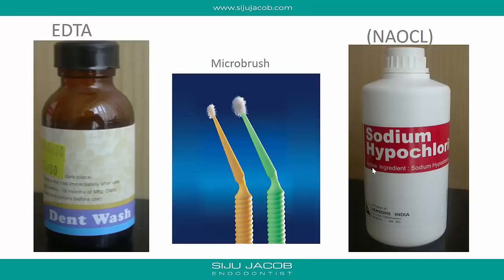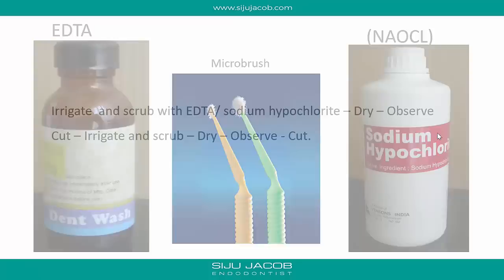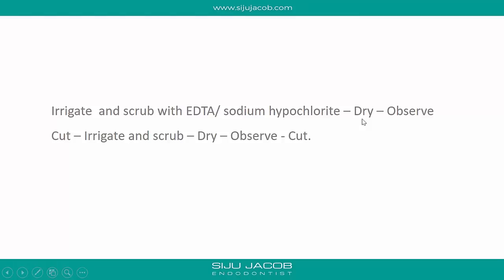Before dividing clinical techniques into anterior and posterior teeth, I'd like to briefly mention the solutions we use. When looking for calcified canals, you need to constantly clean out debris. I like to use a micro-brush with EDTA followed by sodium hypochlorite. The sequence is: irrigate and scrub with EDTA or sodium hypochlorite, wash it dry, then observe for color changes. Once I observe color changes I start cutting with the burr; when debris obscures landmarks I irrigate, scrub, dry, observe again, then cut again — repeating this sequence. You need a lot of patience.